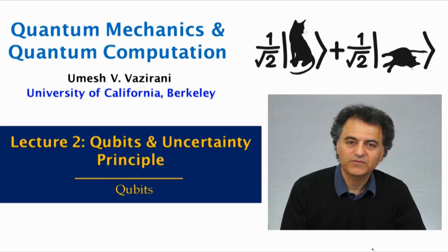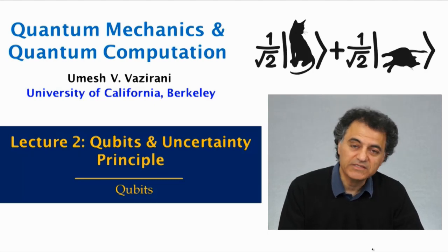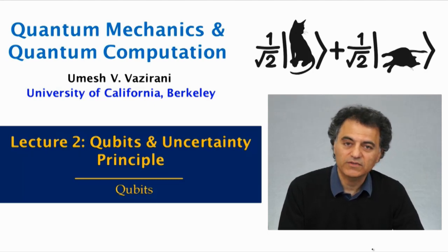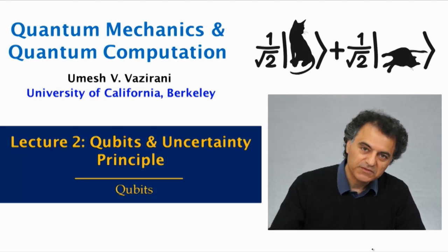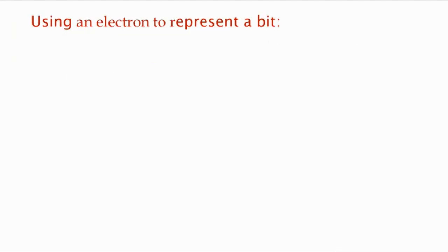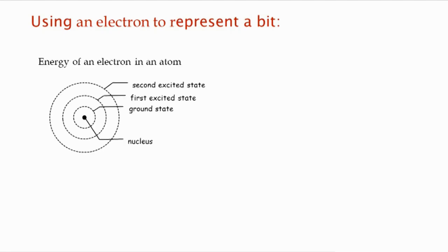In this lecture, we'll talk about the basic unit of quantum information, the qubit. So let's start with a thought experiment. Let's suppose that we want to represent a bit using the state of an electron. So how would we do this?